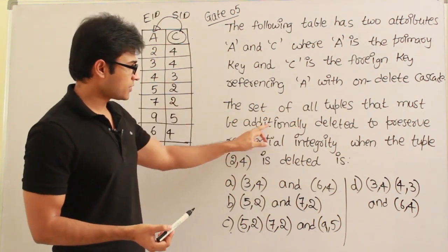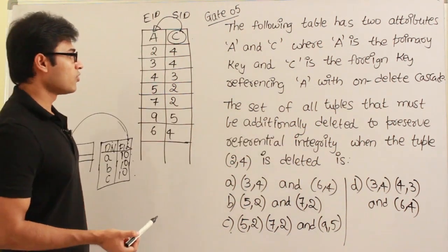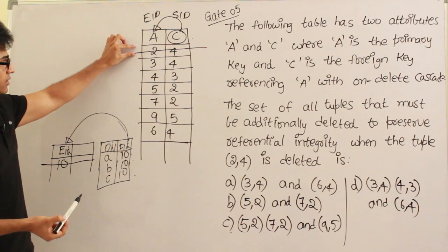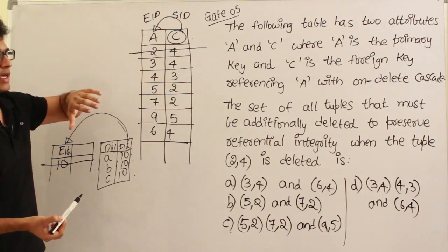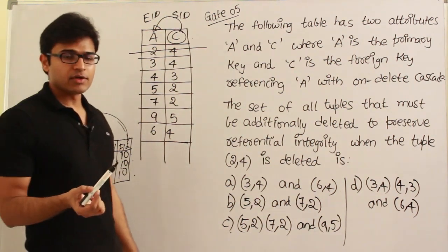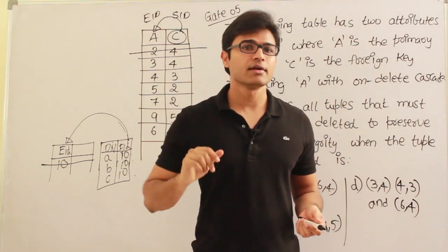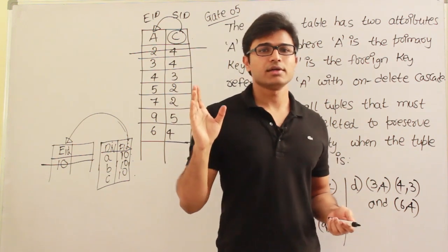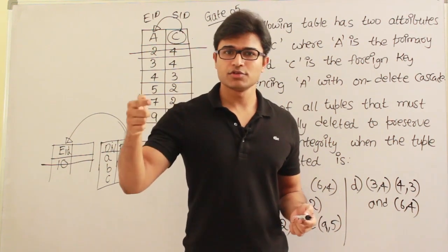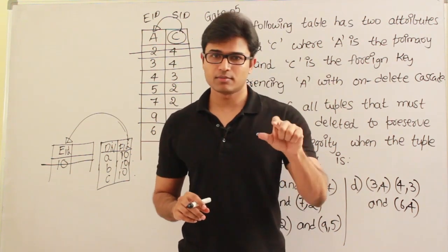The question asks: what is the set of all tuples that must be additionally deleted to preserve referential integrity when the tuple (2, 4) is deleted? They want to delete tuple (2, 4). If you delete this, what are the other tuples that have to be deleted in order to preserve referential integrity? Whenever you delete a tuple, the tuples which are referring to that particular tuple should also be deleted — otherwise the database would be inconsistent. On delete cascade means you are supposed to delete all the others.